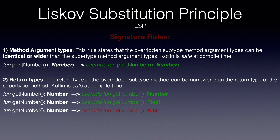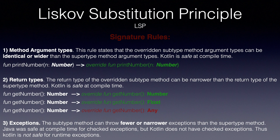And finally, exceptions: the subtype method can throw fewer or narrower exceptions than the supertype method. Java was safe at compile-time for checked exceptions, but Kotlin does not have checked exceptions. Thus, Kotlin is not safe for runtime exceptions — you have to take care of this yourself. Think about it: if you override a method, you cannot have it throwing exceptions that the super function does not. The caller would not have the proper try-catch for it. You can, of course, throw fewer exceptions.